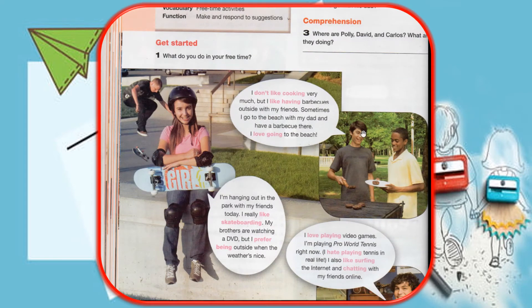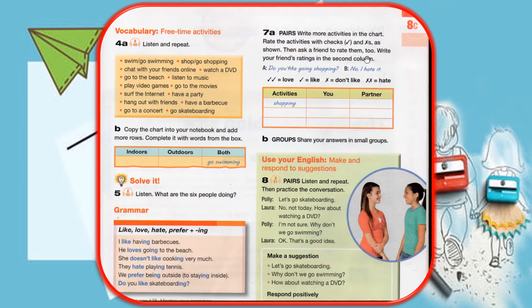Okay, comprehension. Where are Polly, David, and Carlos, and what are they doing? Vocabulary, free time activities. Listen and repeat: swim, go swimming, shop, go shopping, chat with your friends online, watch a DVD, go to the beach, listen to music, play video games, go to the movies, surf the internet, have a party, hang out with friends, have a barbecue, go to a concert, and go skateboarding.